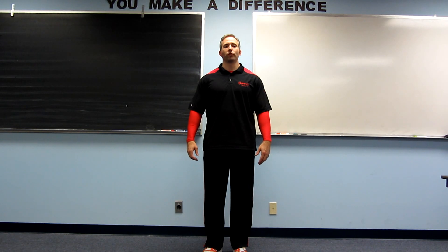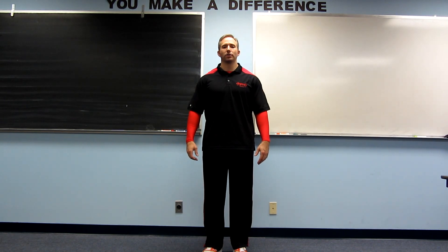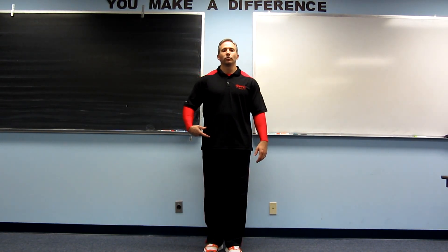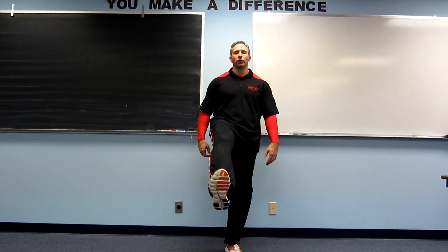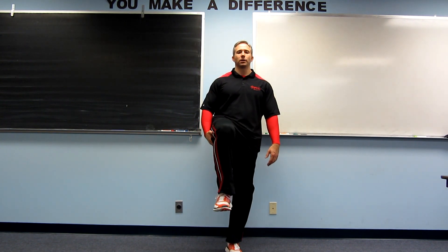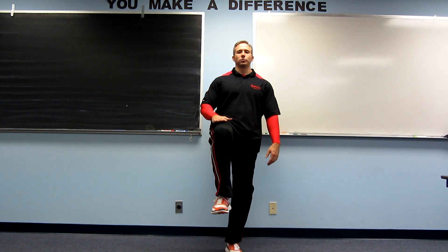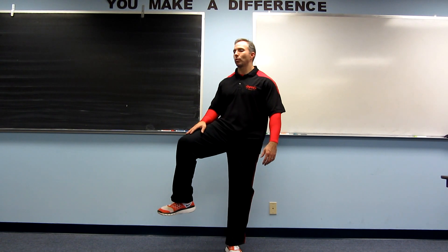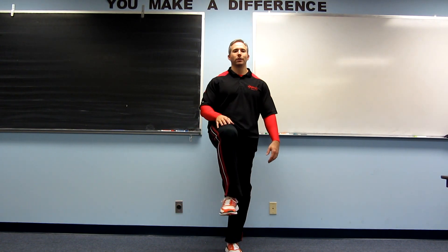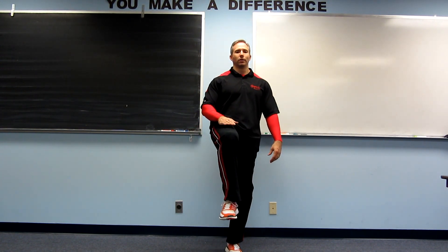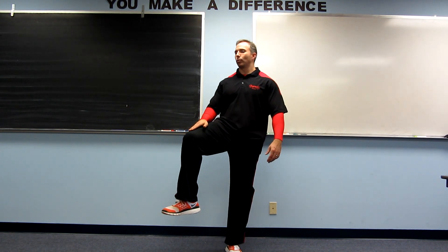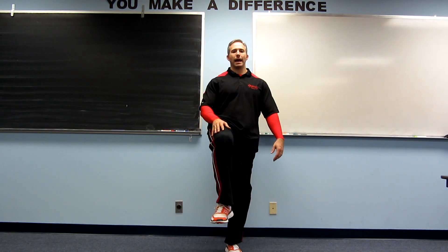The hip can also do horizontal abduction and adduction. First we have to get into position — bring our leg forward and bend the knee to make it easier. From here we can produce horizontal abduction, moving away, and horizontal adduction, moving back.